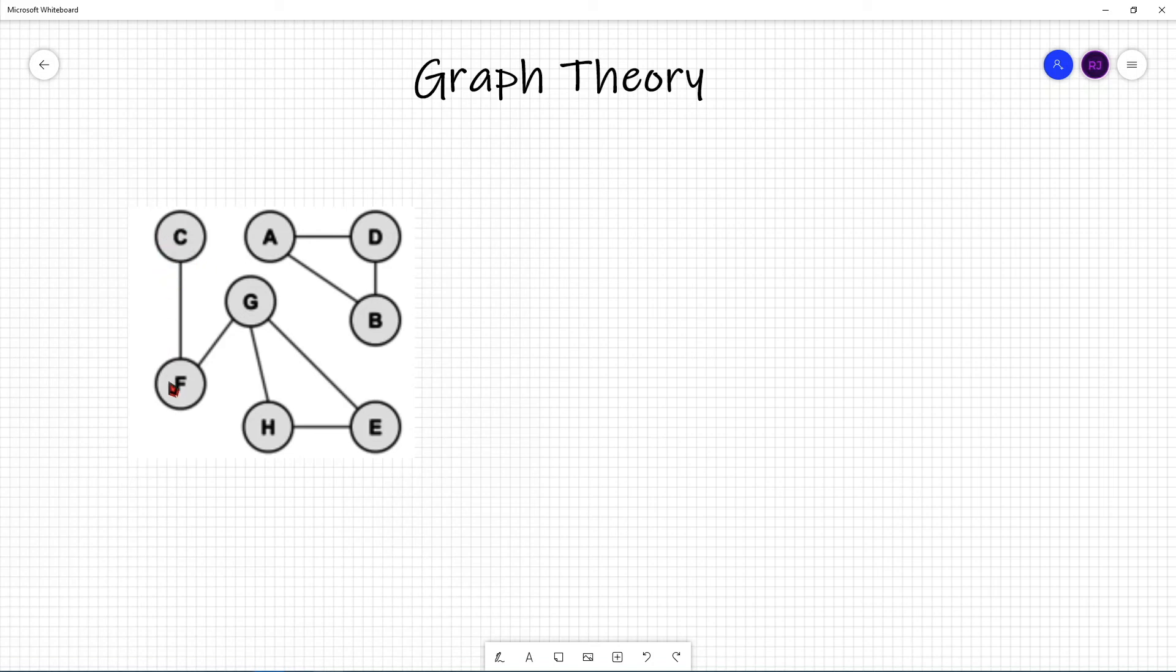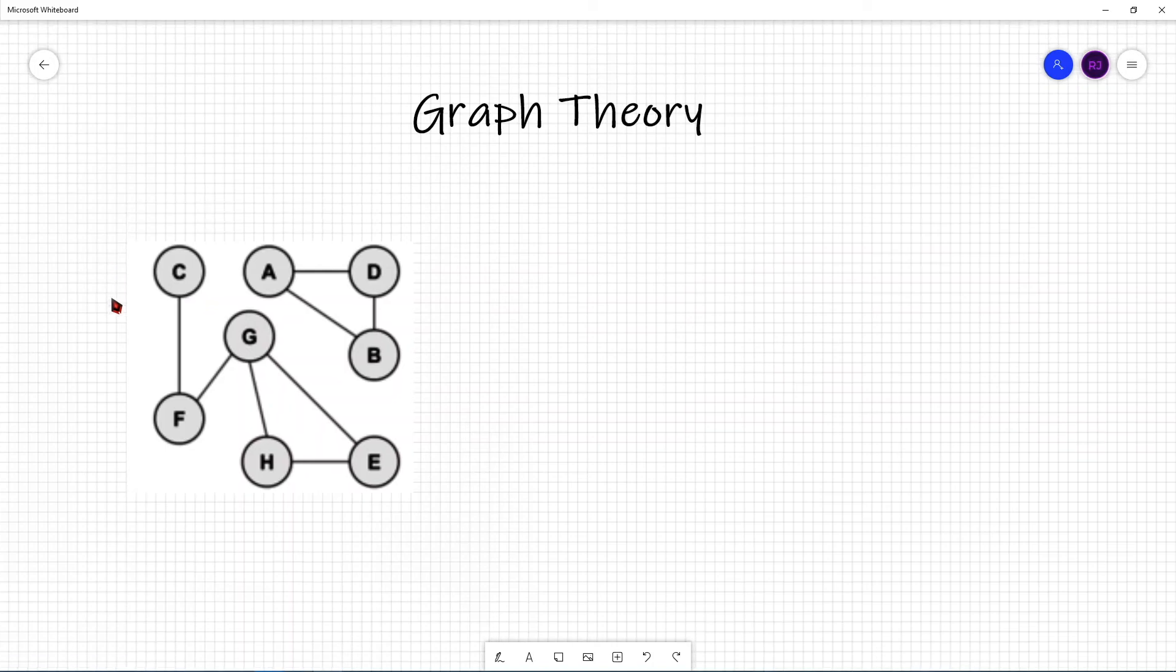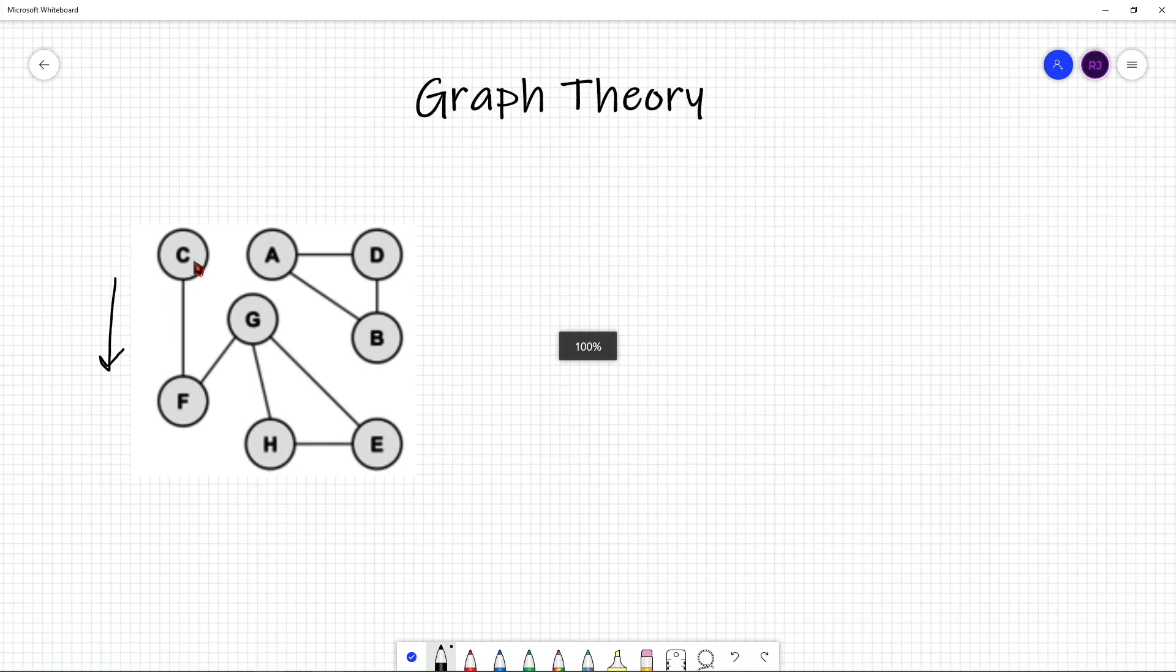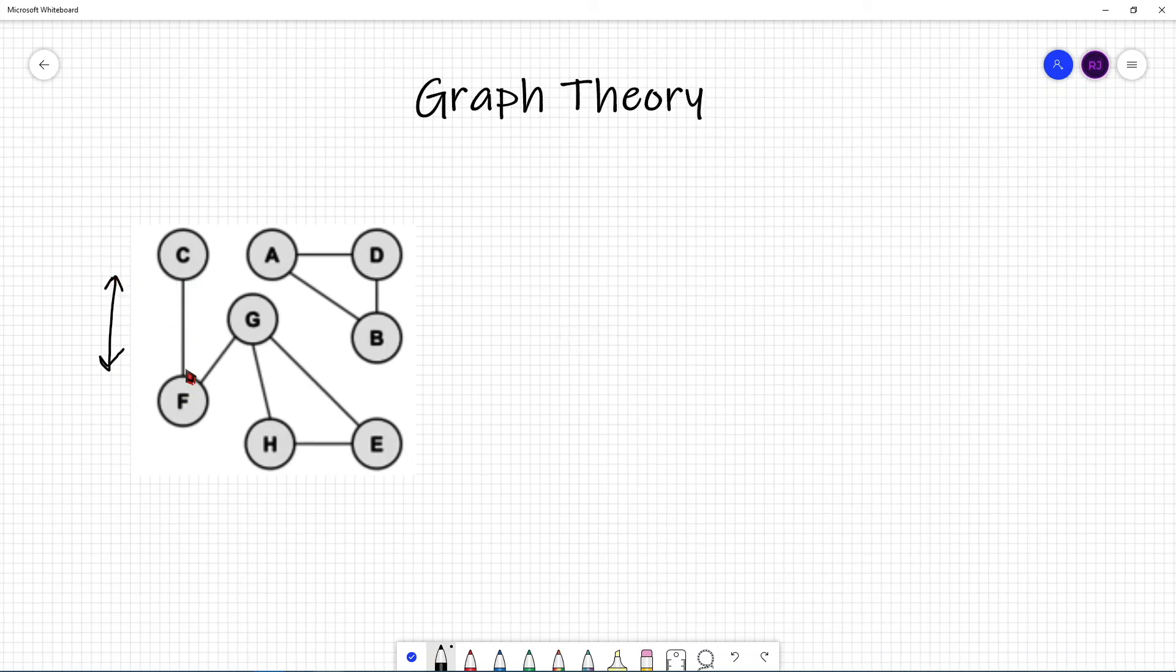Essentially, when the edges are undirected, then there's a path from C to F or a connection from C to F and F to C. If there's just a directed edge, for example, if there was just an arrow pointing from C to F instead of this edge, then there's a connection from C to F, but there's not a connection from F to C. But if the arrow was drawn both ways, if it was a line with two arrowheads, then there's a connection from C to F and F to C.